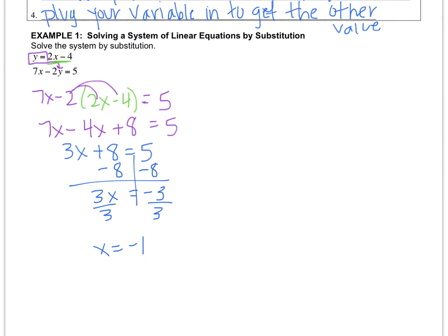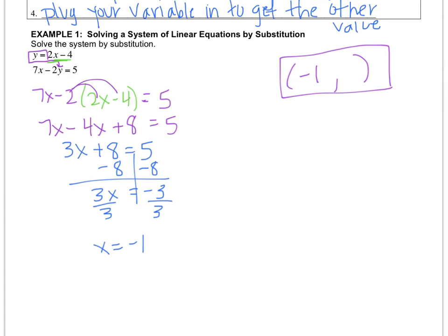Now remember we talked about the answer to a system is the coordinate point where the graphs intersect. So right now I only have half of the answer. I mean luckily I have half, but I am missing the y value. So step 4 tells me that I'm going to plug in my x value into an equation to get the y value.